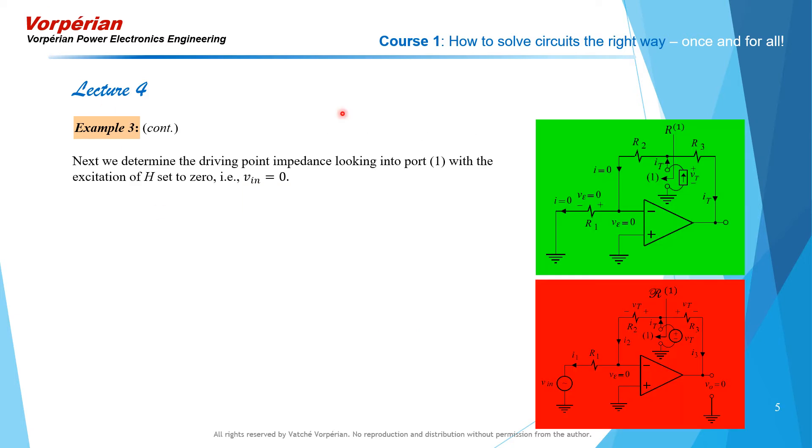We now have to perform two additional calculations in order to apply the extra element theorem. The first one is the ordinary impedance looking back from port 1 when the excitation is set equal to 0, and the second one is the null impedance looking back from port 1 with the response nulled. We have done both of these calculations before and I'll go over them quickly right now and just state the result.